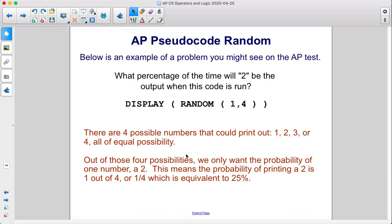Out of those four possibilities, we only want the probability of one number, a 2. This means the probability of printing a 2 is 1 out of 4, or 1 fourth, which is equivalent to 25%.